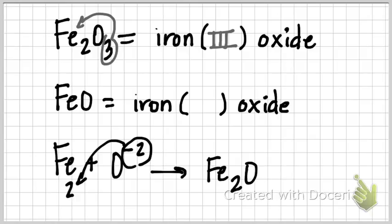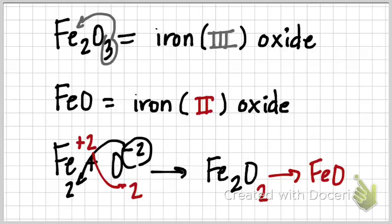The only way it can look like FeO is that this iron has to be a +2. When it's swapped and dropped, it's Fe2O2, and it reduces to FeO. So that means FeO is actually iron(II) oxide.